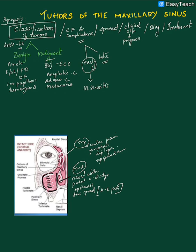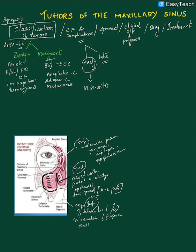The inferior wall is related to the oral cavity, specifically the palatal surface of the maxillary bone and maxillary teeth. If the tumor erodes the inferior wall, features include expansion of the alveolus with visible gingival swelling, ulceration of the gingiva, swelling of the hard palate, deranged occlusion, and difficulty in speech and mastication.